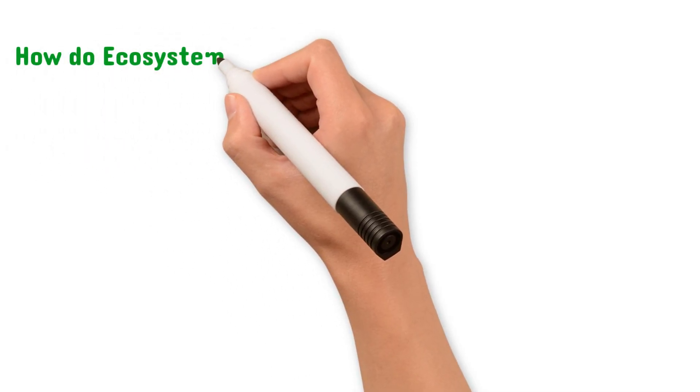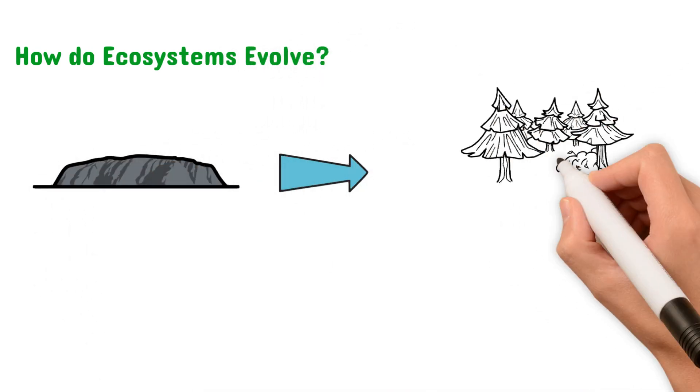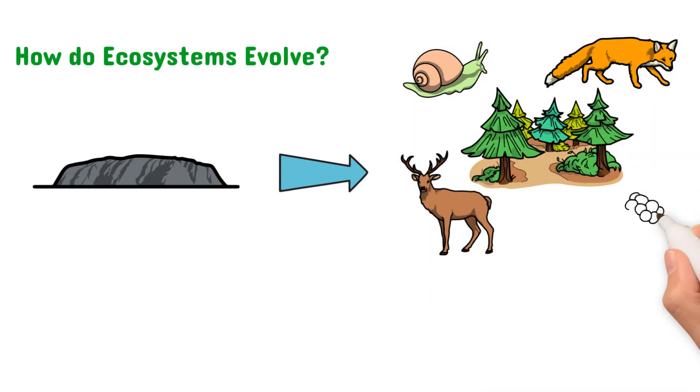Let's begin by looking at how ecosystems evolve. How does a bare rock from millions of years ago turn into the rich ecosystems we know today? The answer is succession.